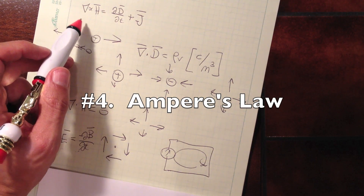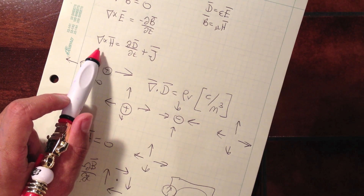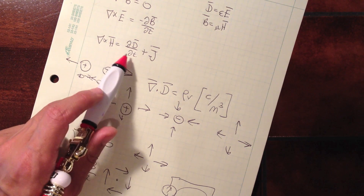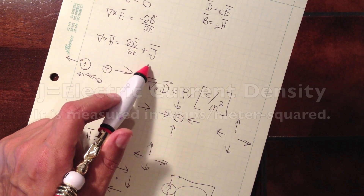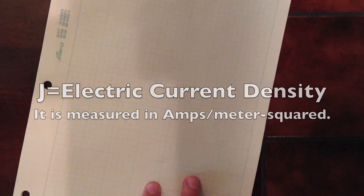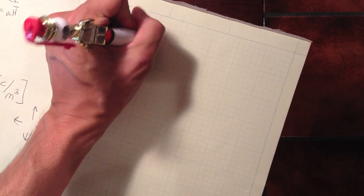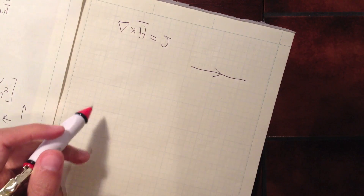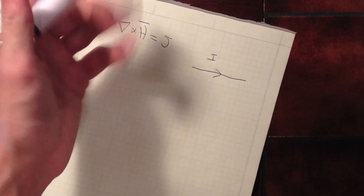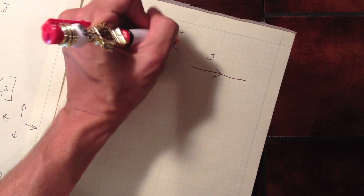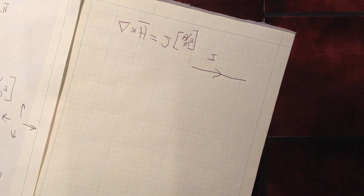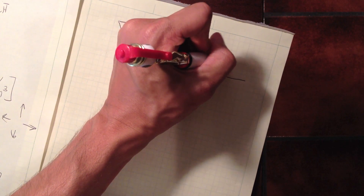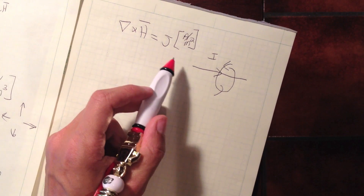The last of Maxwell's equations is known as Ampere's law. This says the curl of the magnetic field is equal to the time rate of change of the electric field plus the electric current density. If we start with the curl of H equals J — J is the electric current density — if you think about current flowing on a wire, usually represented by amps, here it's current density with units of amps per square meter. If you have current flowing through a wire, the magnetic field circles around the wire by the right-hand rule: the current flows this way and the magnetic field wraps around it.